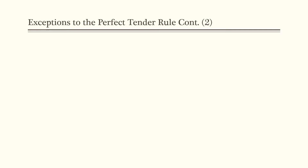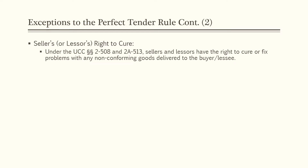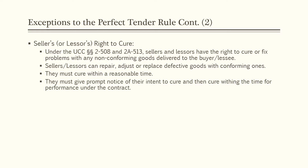The next exception is the seller's or lessor's right to cure. Under UCC Sections 2-508 and 2A-513, sellers and lessors have the right to cure or fix problems with any non-conforming goods delivered to the buyer or lessee. Sellers and lessors can repair, adjust, or replace defective goods with conforming ones. They must cure within a reasonable time, give prompt notice of intent to cure, and complete the cure within the time for performance under the contract.